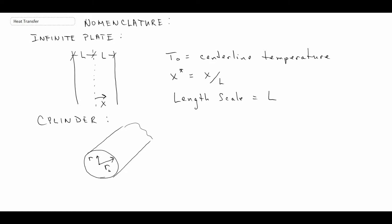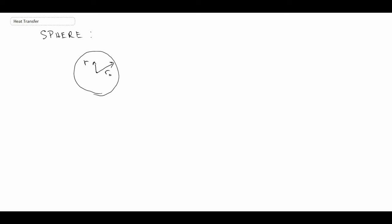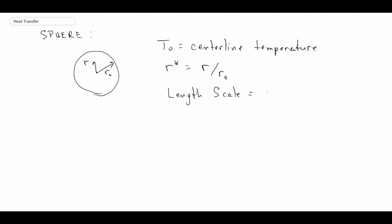For the cylinder, it will have an outer radius R-naught. We'll be interested in the spatial temperature at radial location R. Just like for the infinite plate we had X-star, here we have R-star, which is R divided by the outer radius R-naught. The length scale is just the outer radius. For the sphere, the geometry is similar: we're interested in radial location R, the outer radius is R-naught, T-naught is the centerline temperature, and R-star is the non-dimensionalized radial location, divided by the characteristic length scale R-naught.